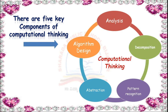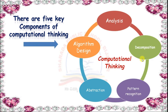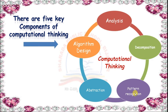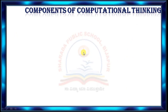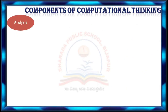There are 5 key components of Computational Thinking. They are: Analysis, Decomposition, Pattern Recognition, Abstraction, and Algorithm Design. Let us discuss these 5.